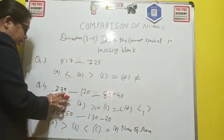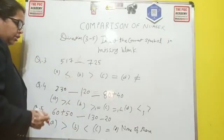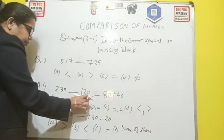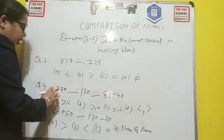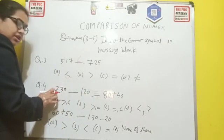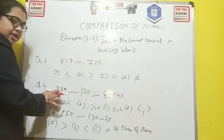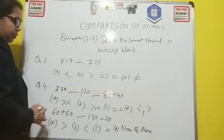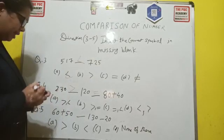Now you see 230 and 120. So this is 120, in 100 position it is 1. And here you see in 230, at 100 position it is 2. So definitely 230 is bigger than 120. So this symbol will be coming.